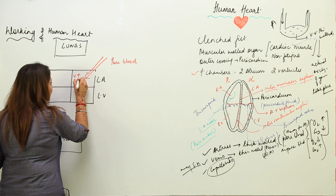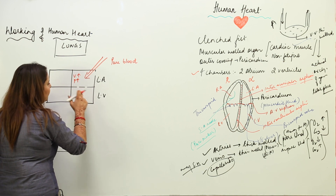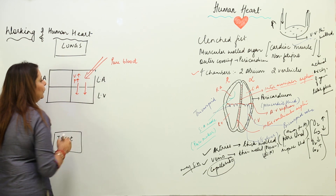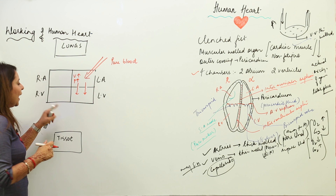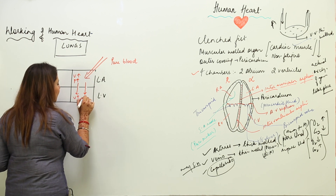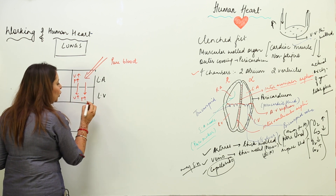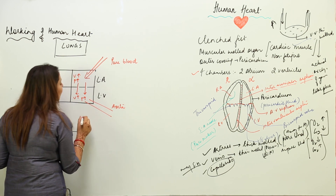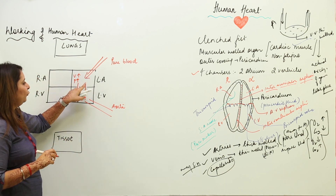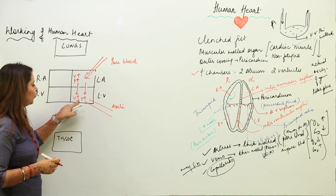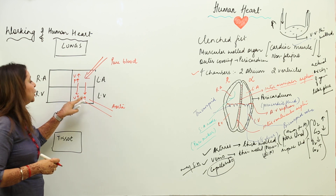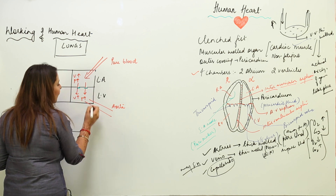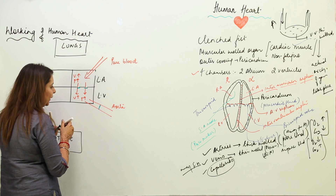Due to increased pressure, the bicuspid valve opens and blood from the left atrium starts flowing into the left ventricle. As the volume increases in the left ventricle, pressure again increases. Due to this, the bicuspid valve closes but the semilunar valve present in the aorta gets open.